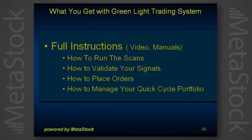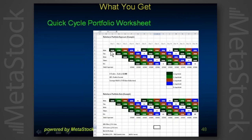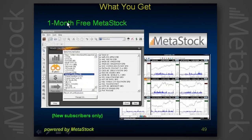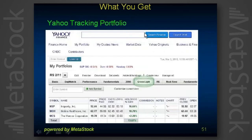What you get with the system: full instructions on how to run the scans, how to validate signals, place orders, and manage the portfolio. You get an instruction manual and an Excel spreadsheet on the Quick Cycle Portfolio that shows you exactly how it works and what the assumptions are. MetaStock has graciously offered one free month for those of you who are not subscribers already — for new subscribers only. We have a trades worksheet that helps figure out your entry pads, your target entries, and your shares, making it really easy to come up with your trade list. We have a template for a tracking portfolio — we use Yahoo because it's free, easy, and it works great. You set up templates so you have all your daily portfolios right there in Yahoo to keep track of them.